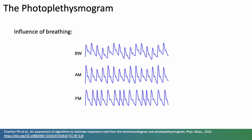The photoplethysmogram is also influenced by breathing in three ways: baseline wander, amplitude modulation, and frequency modulation.